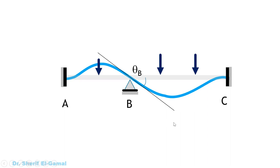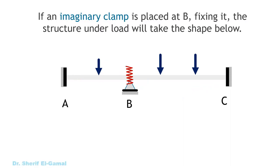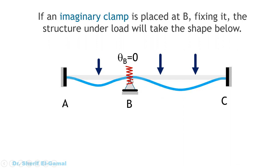The moment distribution method says: let's assume an imaginary clamp is placed at B, fixing joint B and not allowing any rotation under the loads. If we fix this joint, theta B equals zero, and we can divide the beam into two spans — span AB and span BC — each treated as a fixed-fixed span. This allows us to calculate the moments due to loads, called fixed end moments.